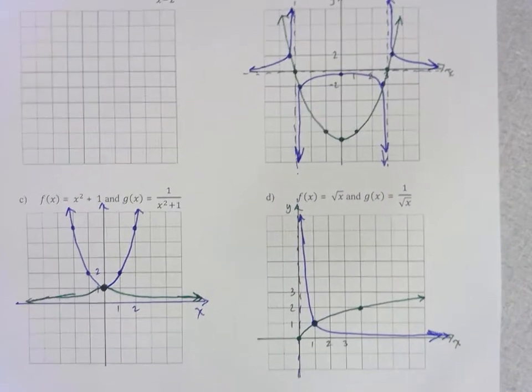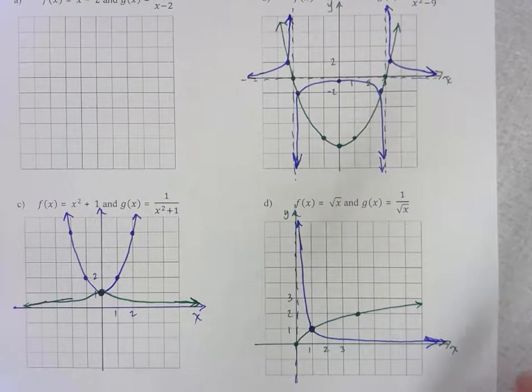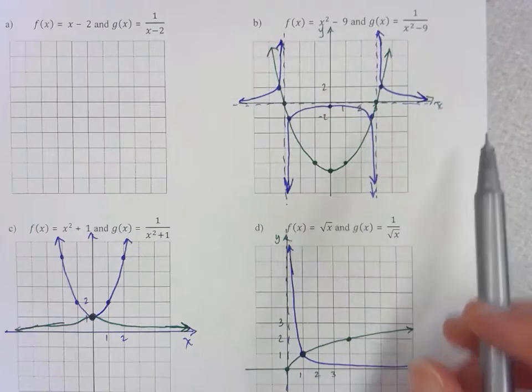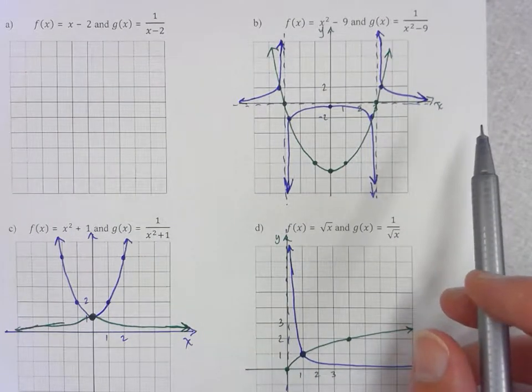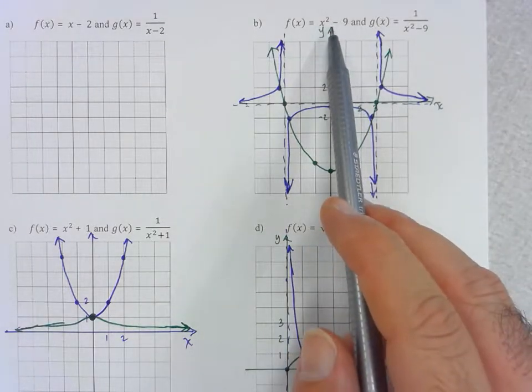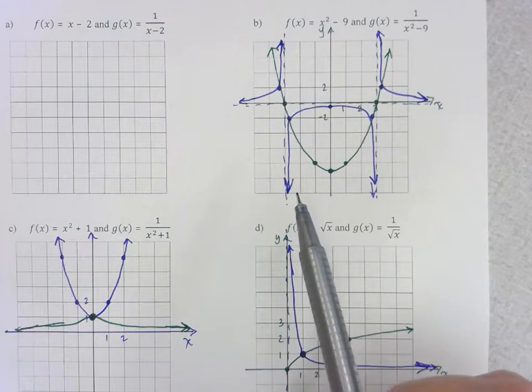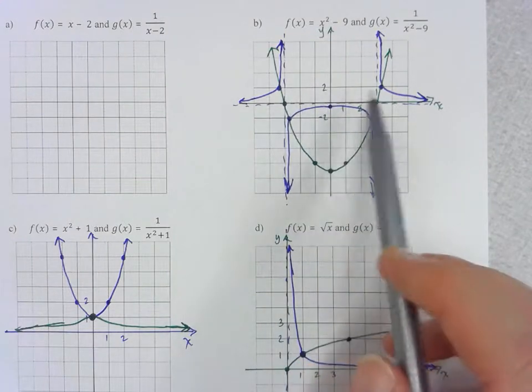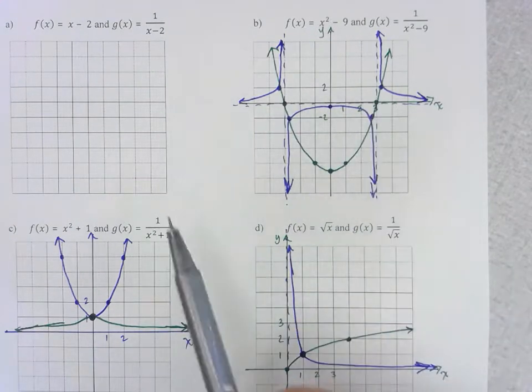So it looks as though all the important information that we get about the original function can help us determine important information about the reciprocal. Okay, so namely the zeros of the original function give us asymptotes, vertical asymptotes on the new function.